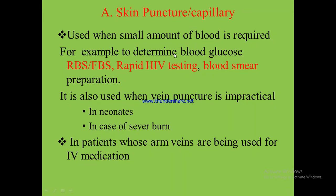Skin puncture or capillary blood collection is performed when the test requires a small amount of blood — for example, to determine blood glucose such as random blood sugar or fasting blood sugar, rapid HIV testing, blood smear, and other tests needing a small amount of blood. It is also used when vein puncture is impractical, such as in cases of severe burn or when arm veins are used for IV medication.